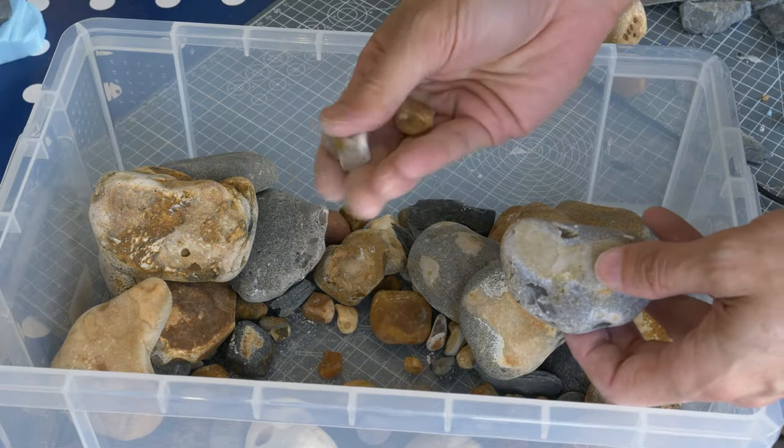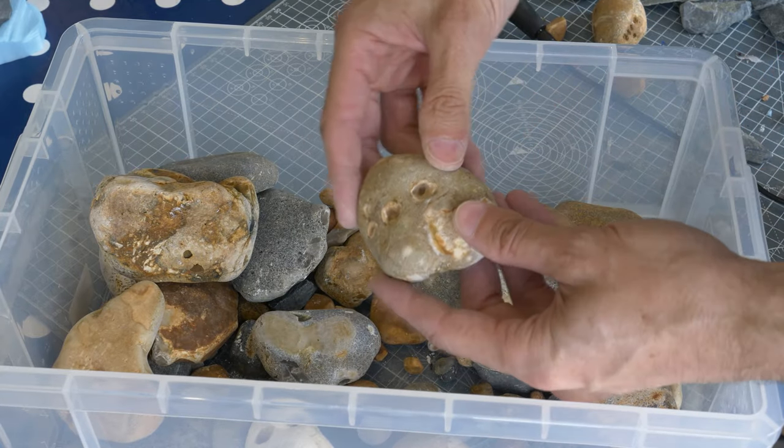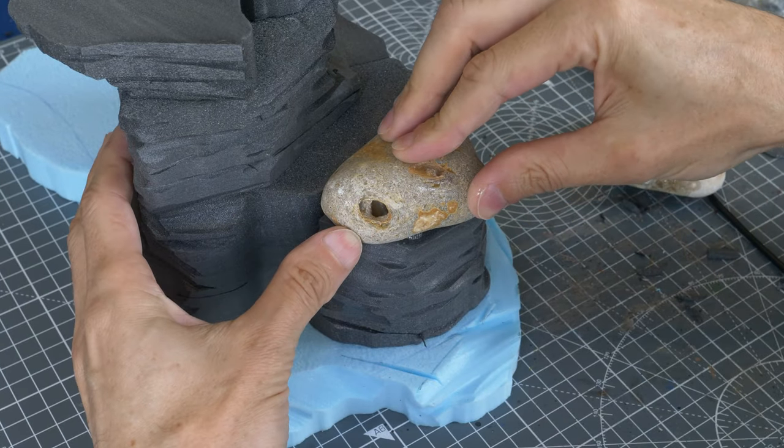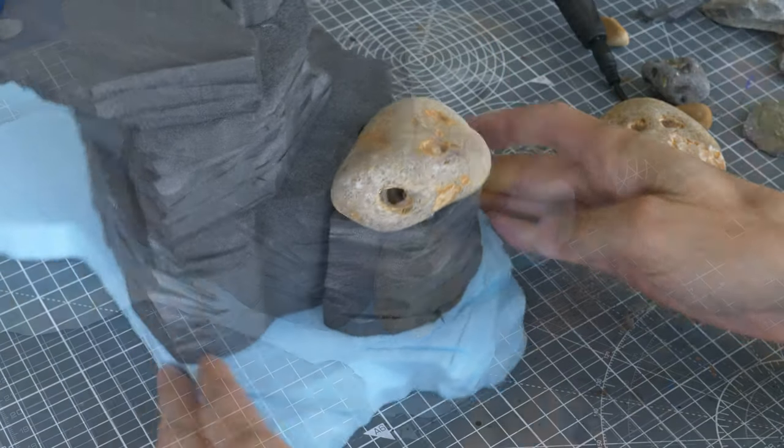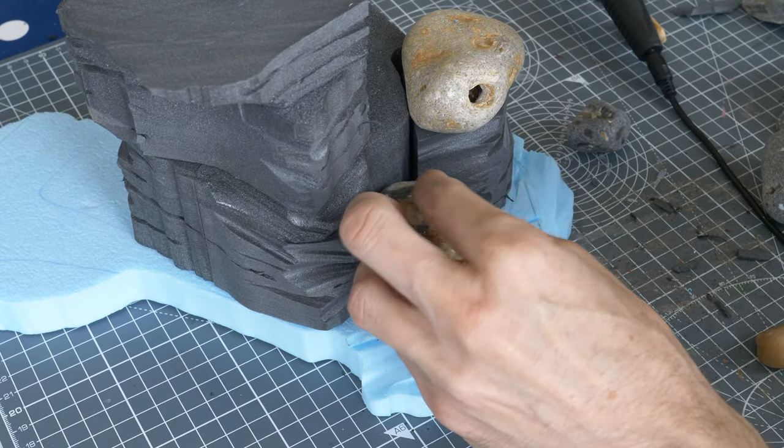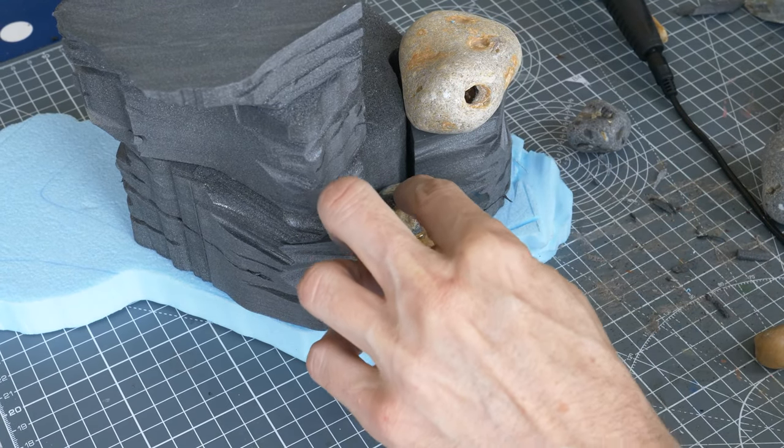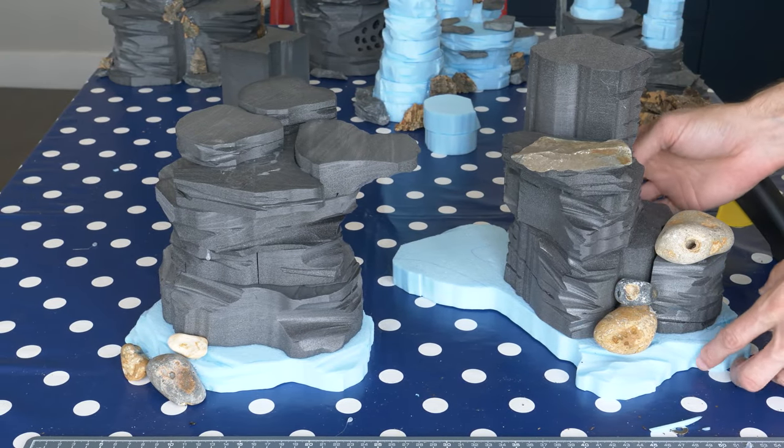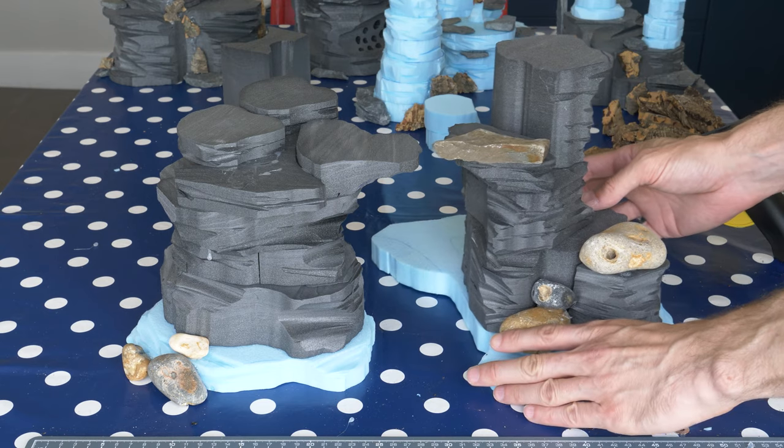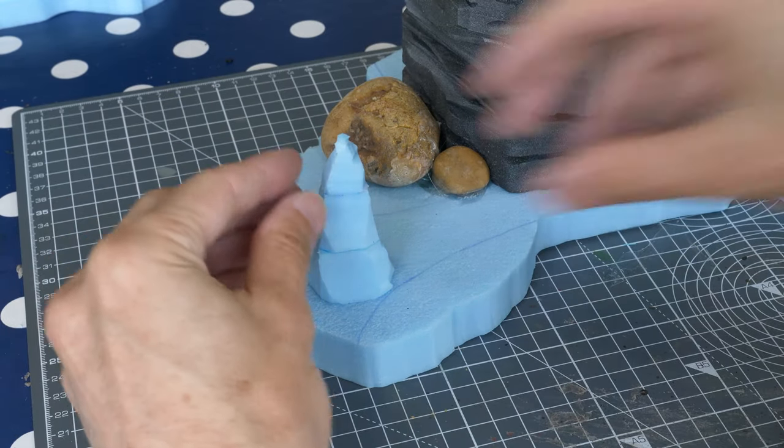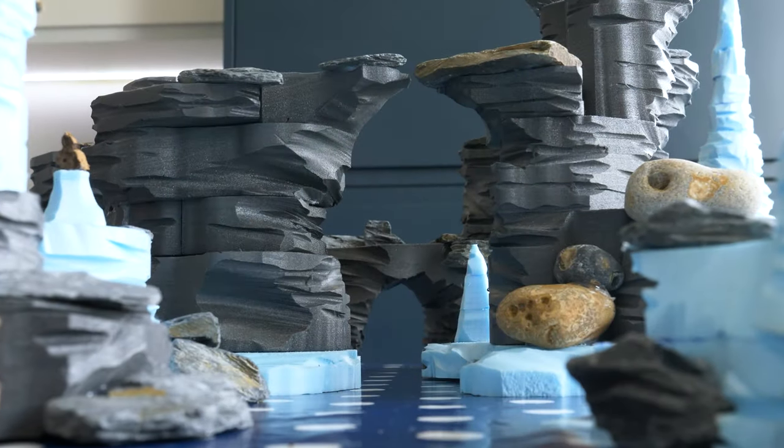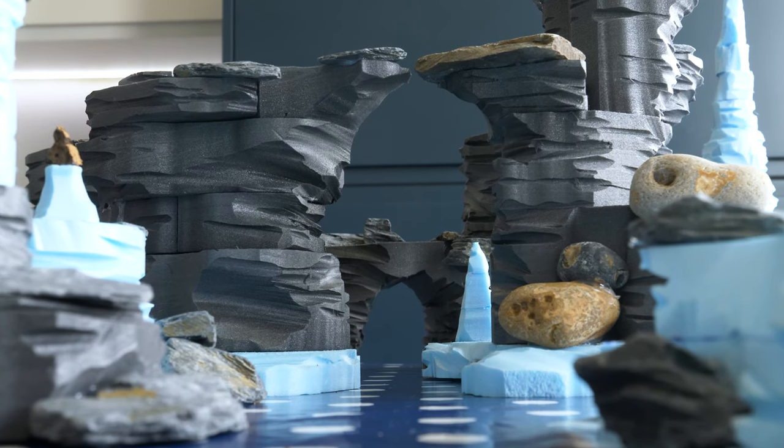Along with the slate, I'm also gluing down some more rounded pebbles, just for the sake of a little variety. Here you can see how things look at the end of the main assembly stage.